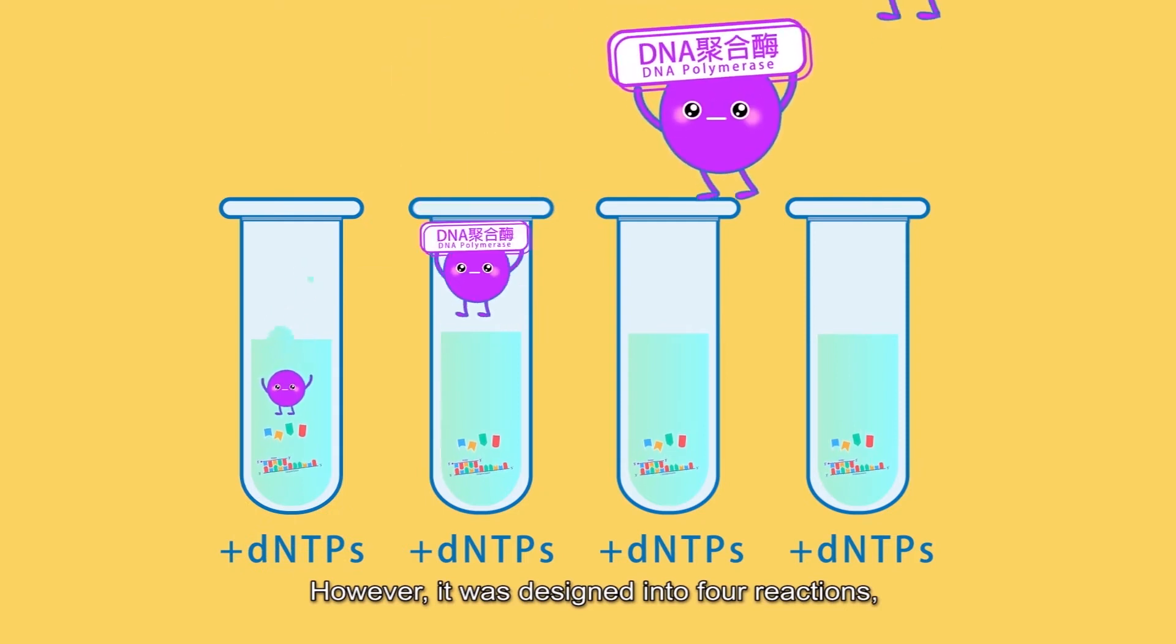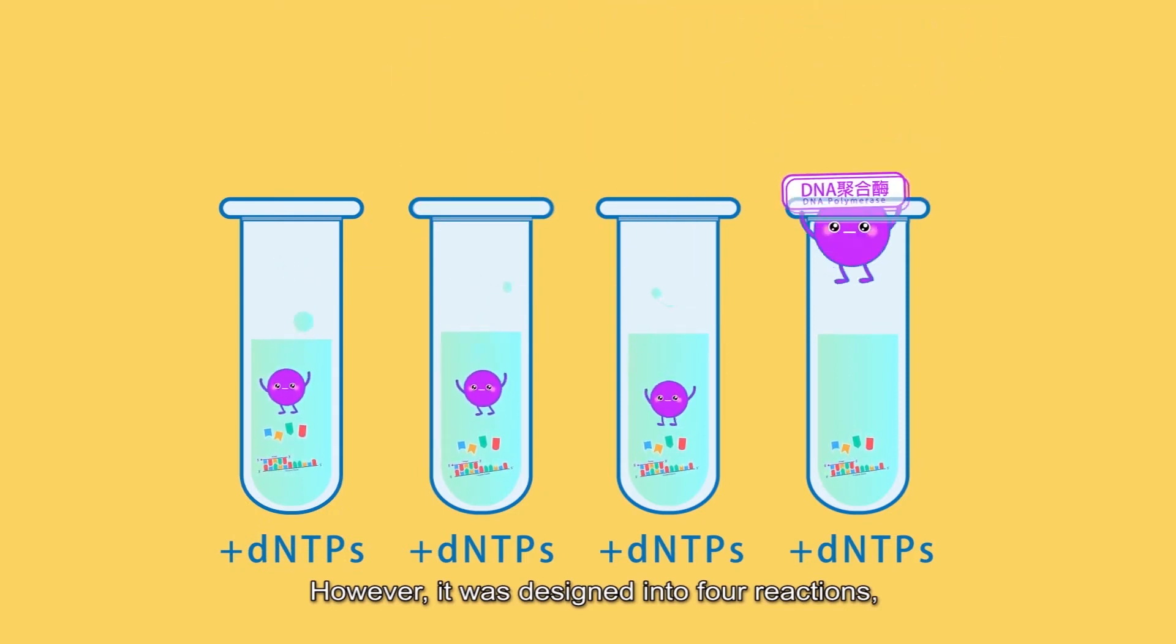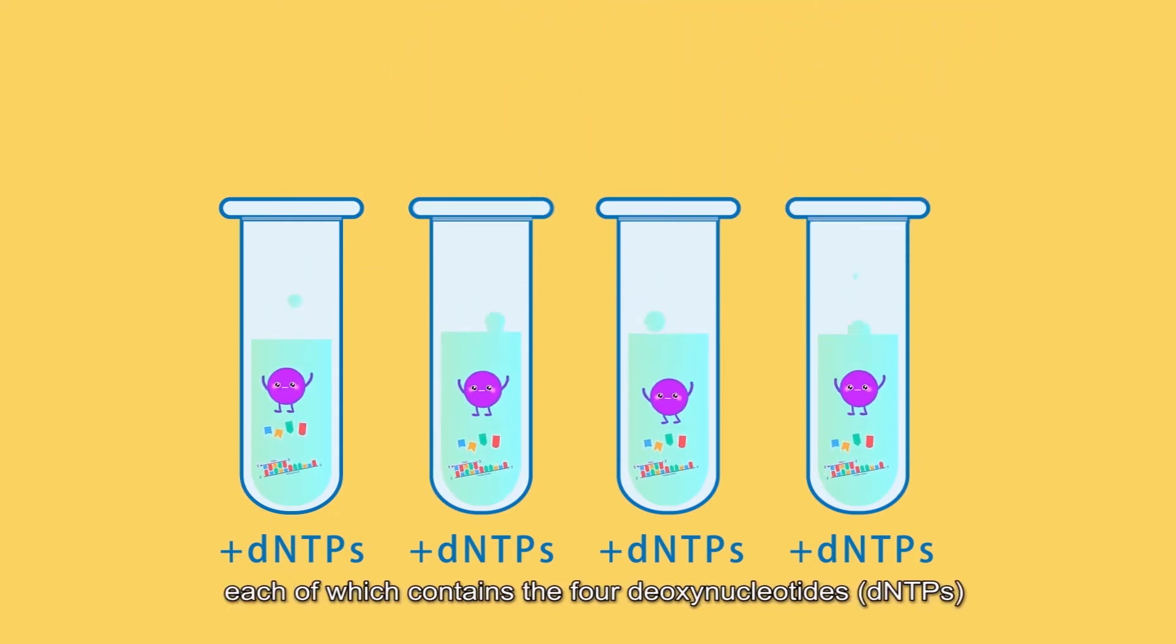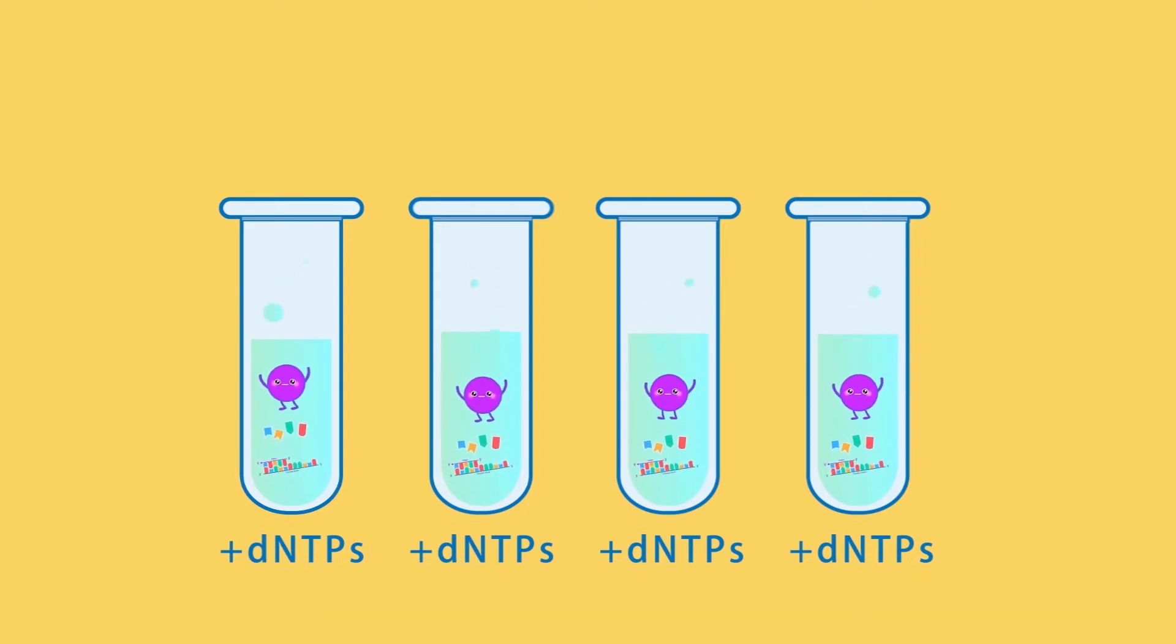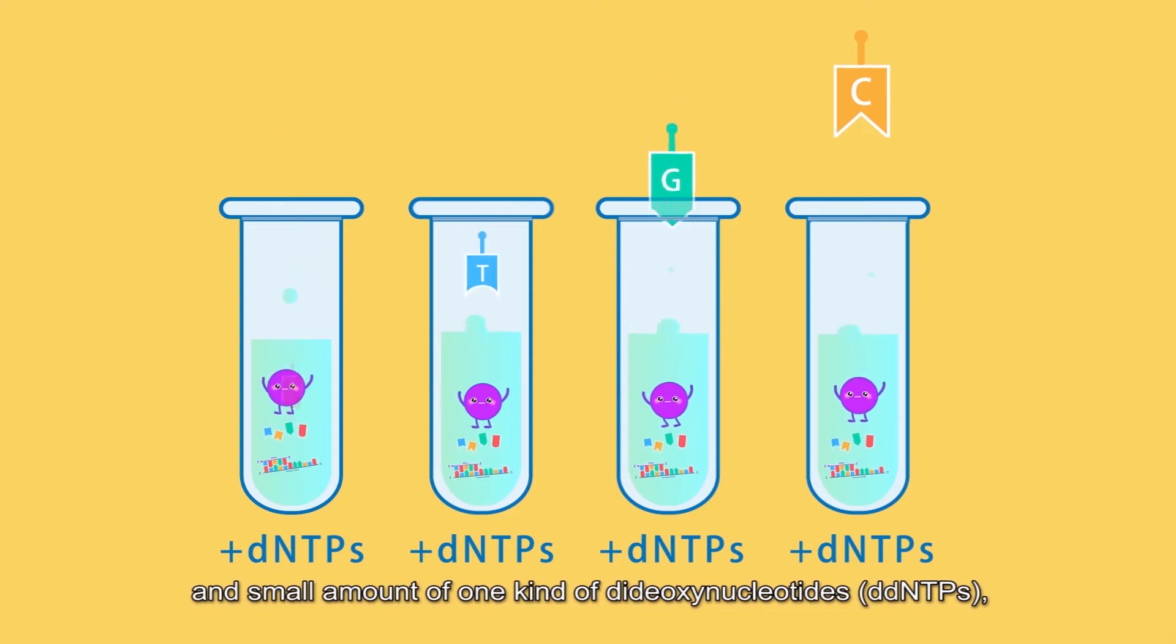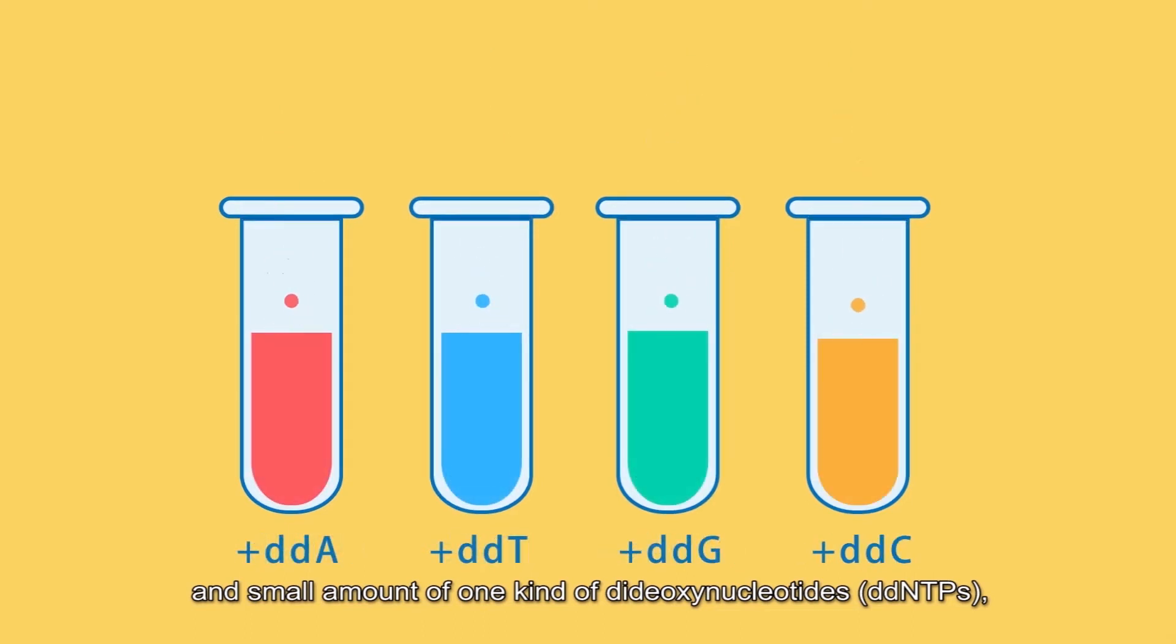However, it was designed into four reactions, each of which contains the four deoxynucleotides, dNTPs, and a small amount of one kind of dideoxynucleotides, ddNTPs, the analogs of deoxynucleotides.